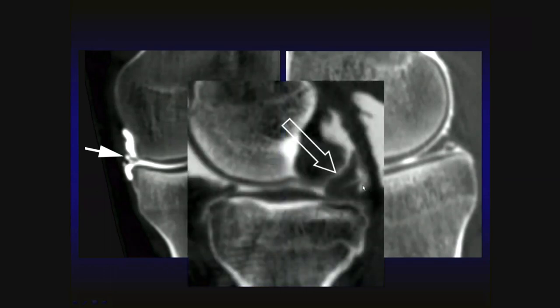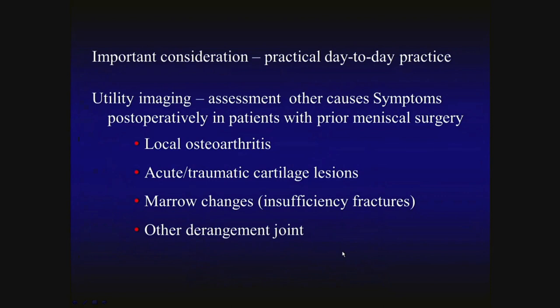Another patient has a large flap displaced tear of meniscal tissue seen on sagittal reconstructed images in the region of the intercondylar notch, showing displaced meniscal tissue arising from the posterior horn of the medial meniscus — a recurrent unstable tear of the medial meniscus. It is also important to consider which imaging technique provides the greatest utility in assessment of other potential causes of symptoms postoperatively in patients with prior meniscal surgery.